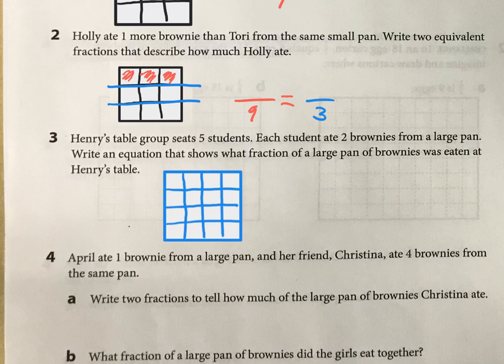So his table had five students and each student ate two brownies. So if each color is a student, then they each had two brownies. That's how much they ate. But the key here that's asking you is write an equation that shows what fraction that they ate. And it might be easiest to even come up with the answer first. So two, four, six, eight—they ate ten out of sixteen pieces. So that would be what they ate.